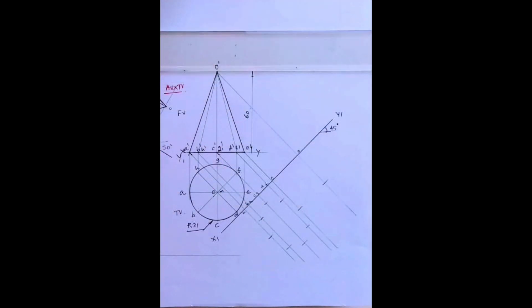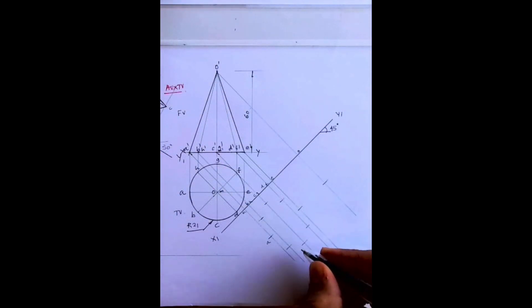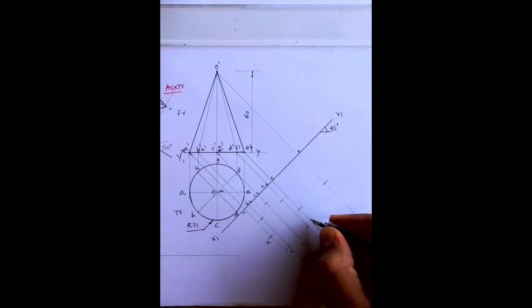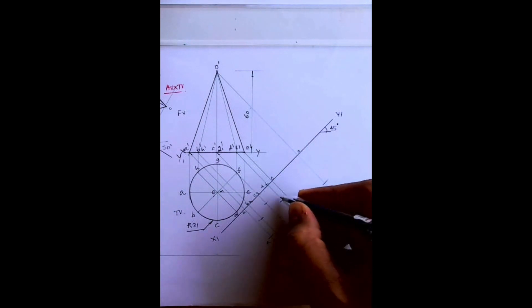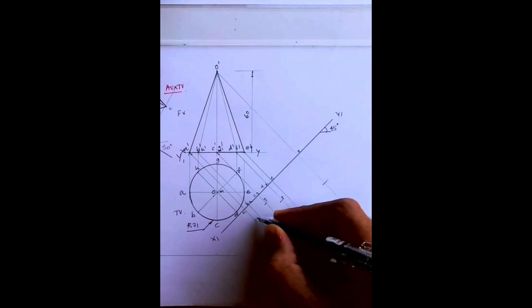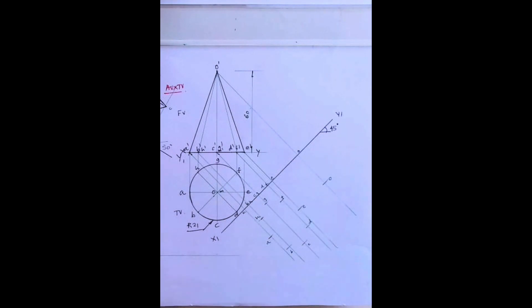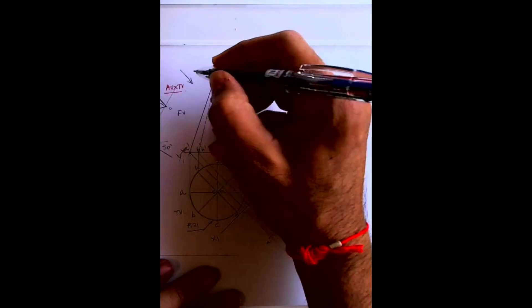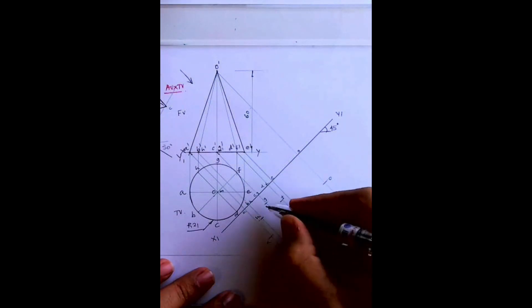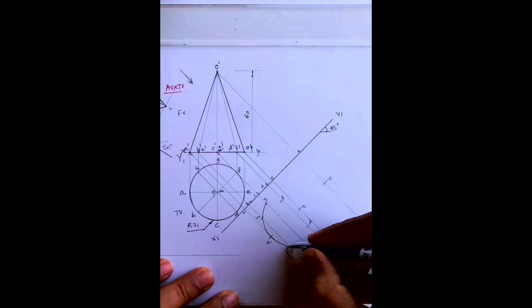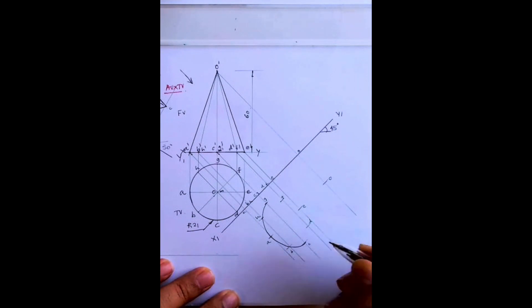See this, so you've got all the points. Now what you need to do, you need to join all these points. Now in this case it will be freehand. If you divide this into 12 parts you'll get more points so it will be easier to draw freehand. Now see, observer is watching it from here, so which part will be nearer to him? This front part g, h, a, b, and c will be nearer to him.